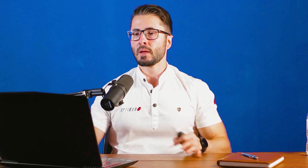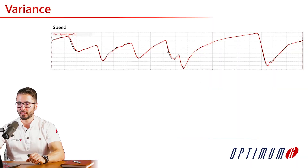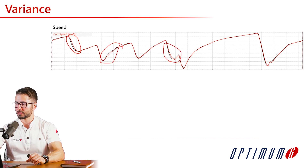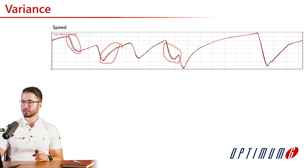By looking at the speed, we can identify where one driver is losing compared to another. For example, the comparison driver in red is gaining time relative to our baseline, but then losing time in the traction zone. We can keep analyzing this for different parts of the track.